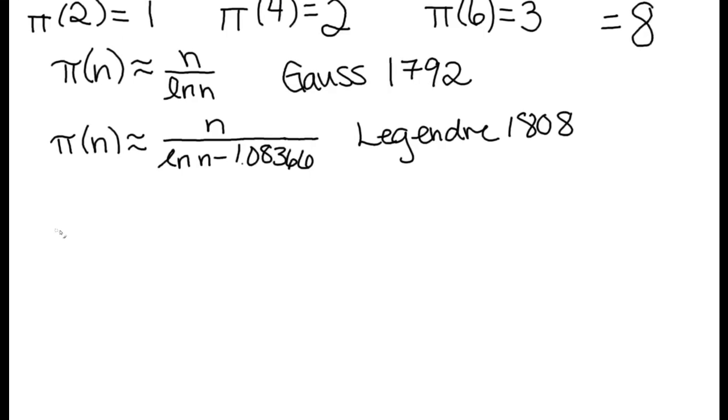And finally, we come to the estimate that Ramanujan was using. So he was using the estimate that required a little bit of calculus. Those of you that have taken calculus will recognize this symbol. But he said it was the integral from 2 to n of 1 over the natural log of x with respect to x.